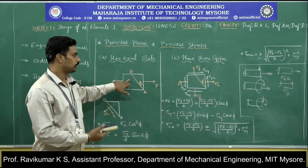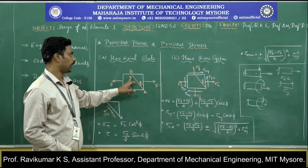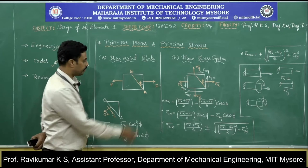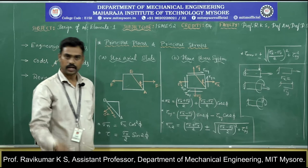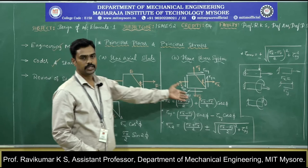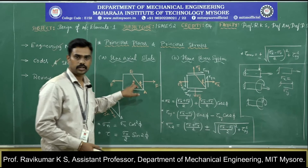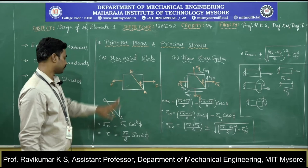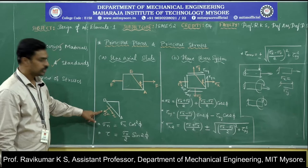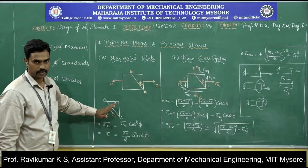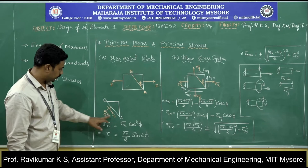To calculate principal stress, you select an inclined plane. If you select a perpendicular plane (phi = 0), the inclined plane becomes the vertical plane, and you get only axial stress. But for principal stress, you consider an inclined plane AB, where you find two stresses: one normal to the inclined plane (normal stress) and one parallel to the inclined plane (shear stress). These equations are available in the data handbook.